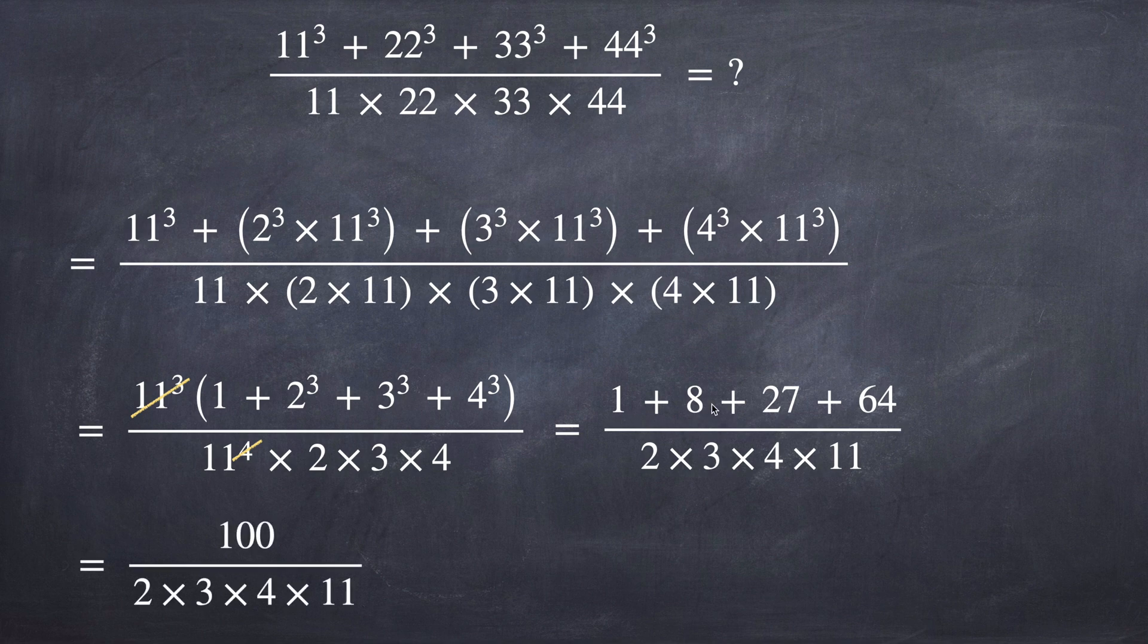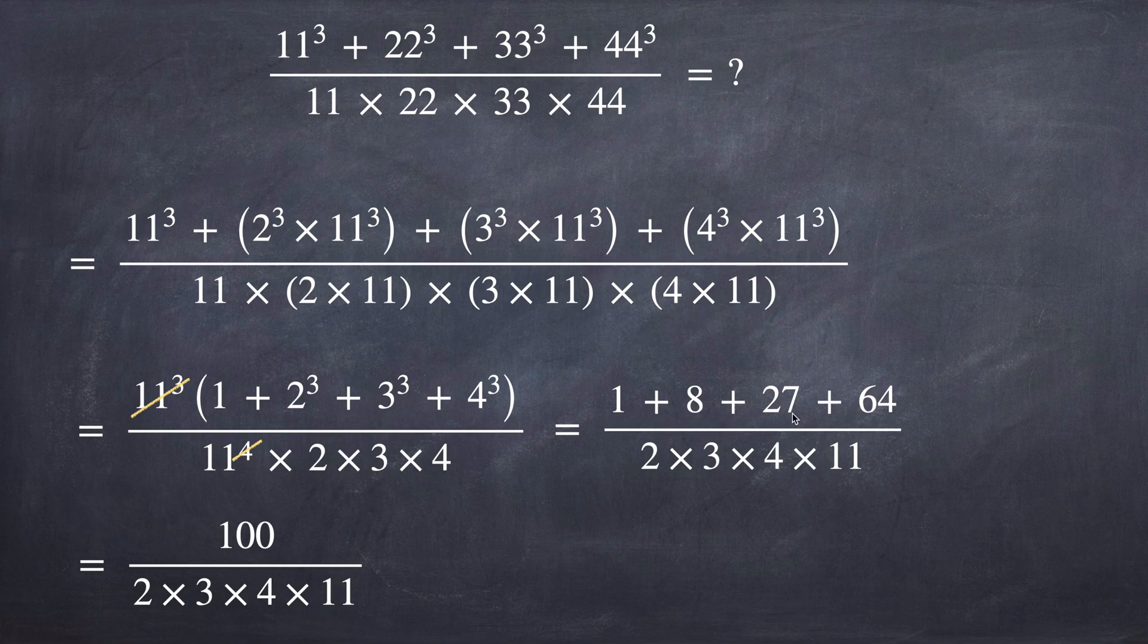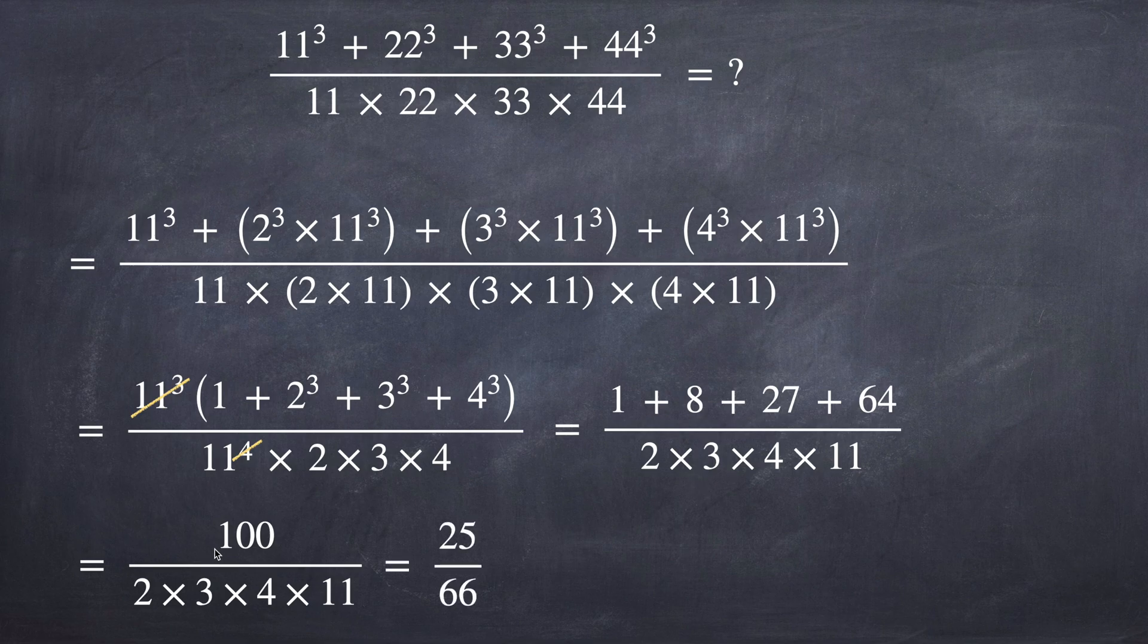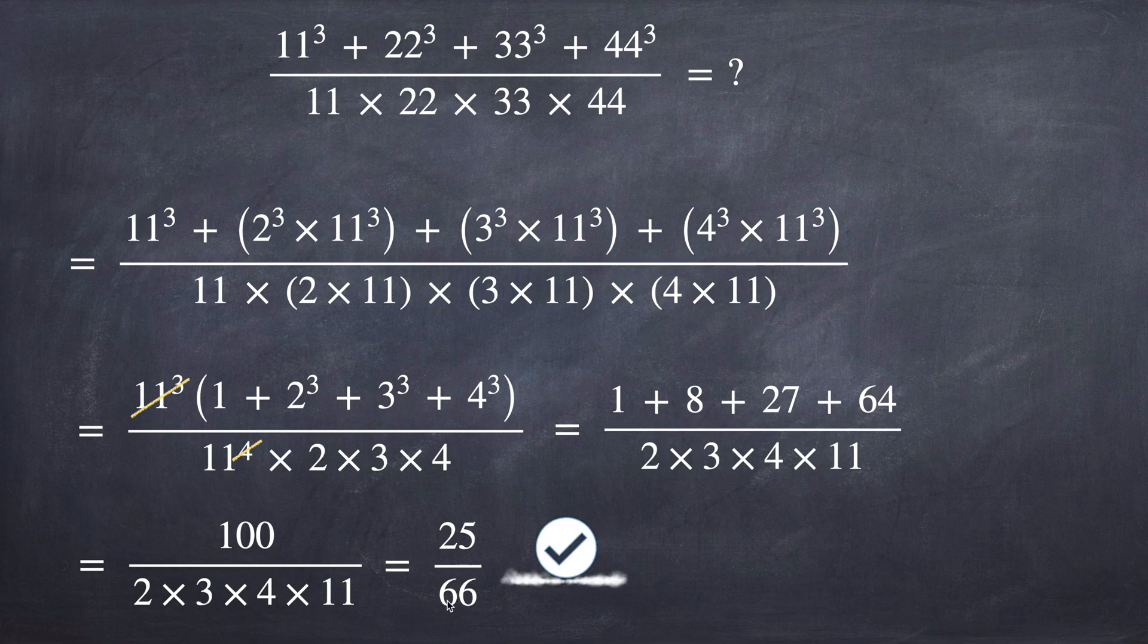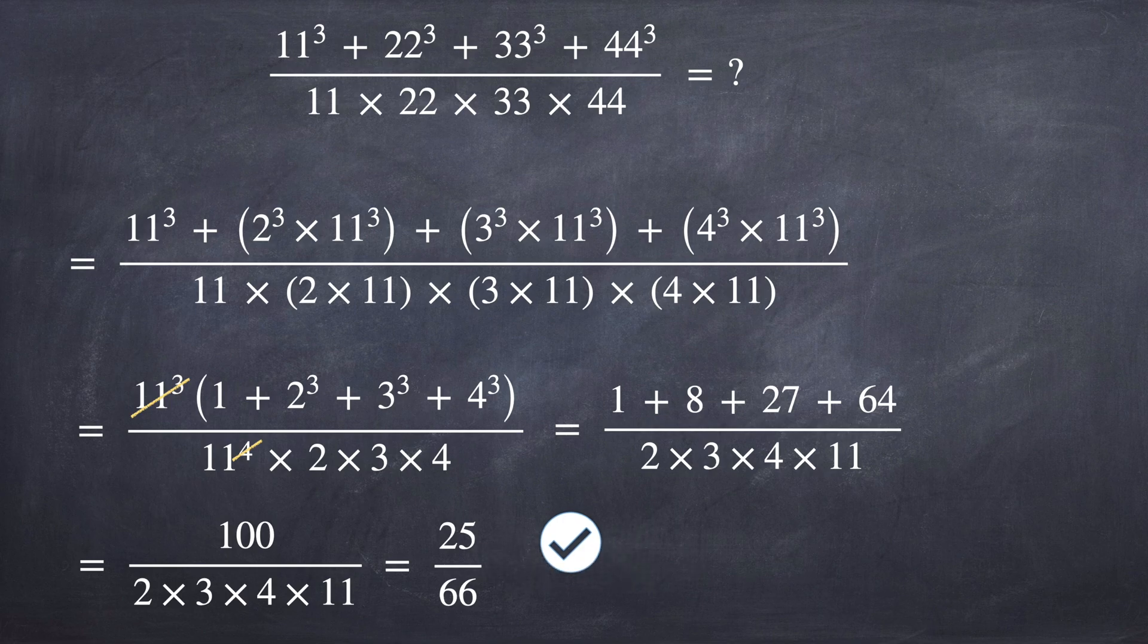1 plus 8 is 9, plus 27 is 36, plus 64 is 100 over the same denominator. Let's try to simplify the numerator. So 100 over 2 is 50. If you divide by 2 again, you get 25. So let's do that, 100 over 4 is 25. In the denominator, we get 2 times 3 which is 6 times 11, 66. And this is the answer for the problem: 25 over 66.